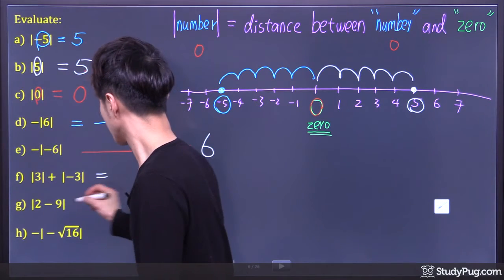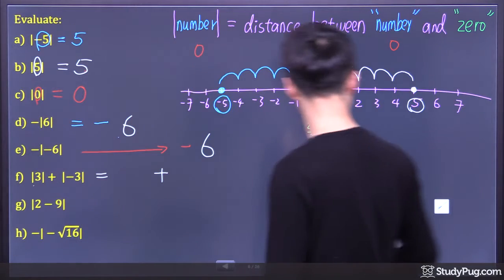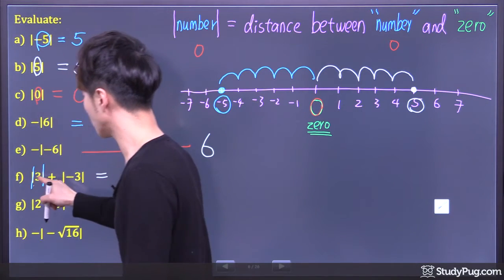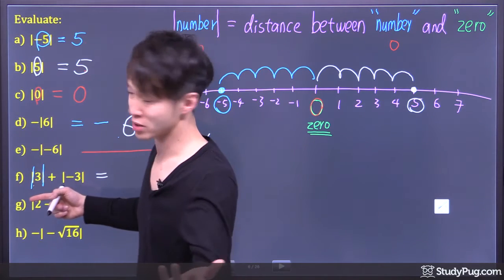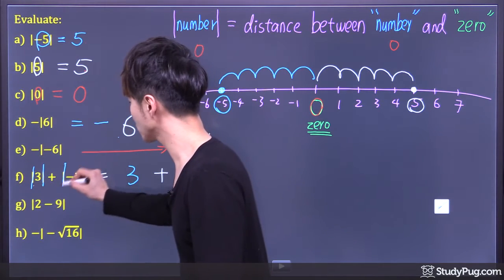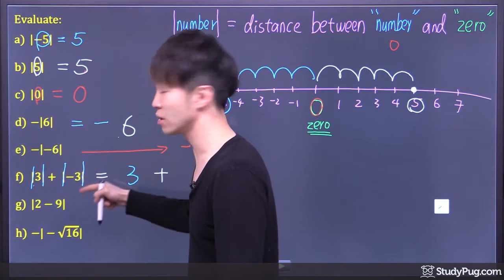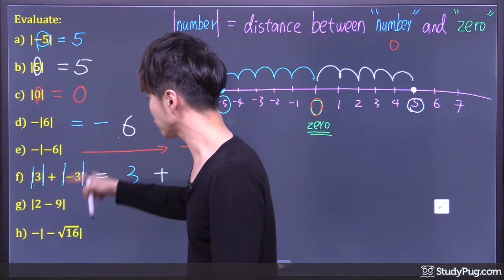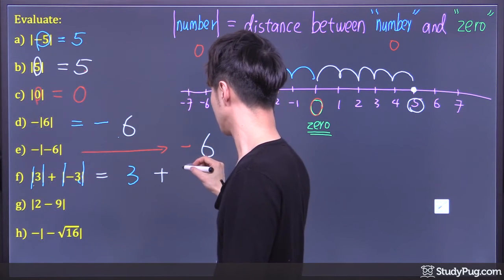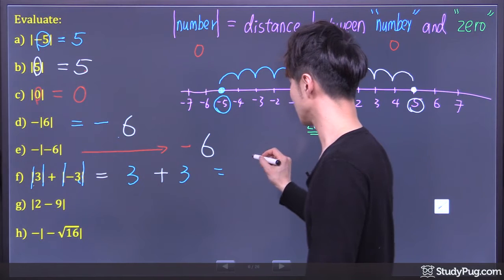Question F: here we are adding two absolute values. What's the absolute value of a positive number? It's just the number itself, which is 3. What's the absolute value of a negative number? This absolute value will give us a positive answer, so the absolute value of negative 3 is positive 3. At the end, we have 3 plus 3 — that's 6.